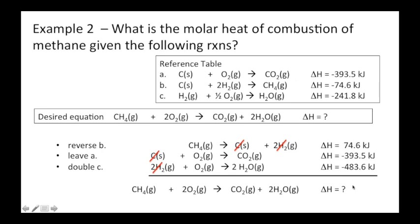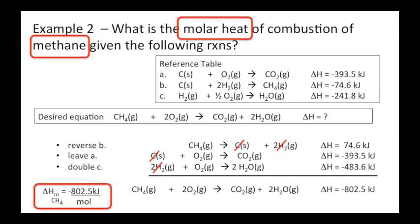CH4 plus 2O2 makes CO2 and two H2Os. I add all my heats together. I get negative 802.5. Molar again. But we're talking one mole of methane. So again it's the same answer. One mole negative 802.5 kilojoules per mole. So that is lesson five.